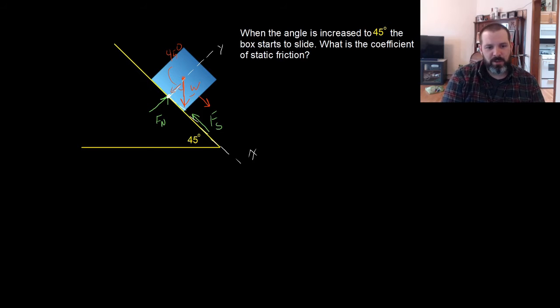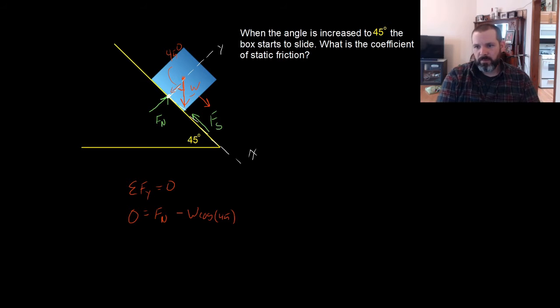If I sum my forces in the y, they have to equal zero. Zero equals F_n for the normal force, minus w cosine of 45. If we solve this, we find that F_n equals w cosine of 45.